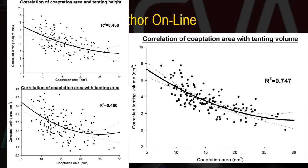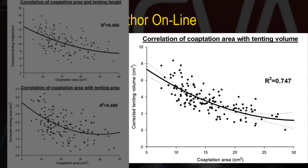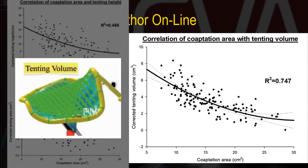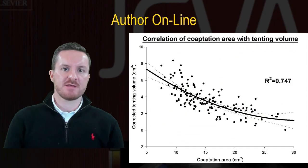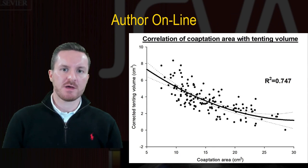The most important finding is that the most negative correlation was seen with tenting volume — the greatest increase in tenting volume was associated with the greatest reduction in coaptation area. This is predictable given that tenting height and tenting area are two-dimensional measurements representative of a single tomographic plane, whereas tenting volume represents the entire surface and topography of the mitral valve. It is therefore natural that tenting volume is most closely related to changes in coaptation area.